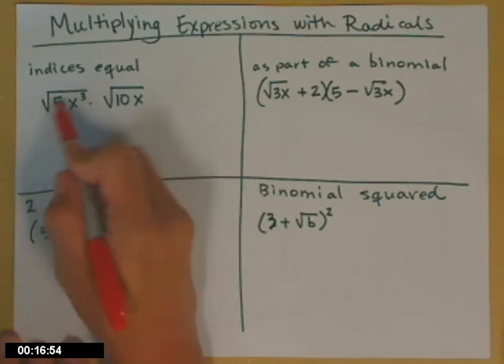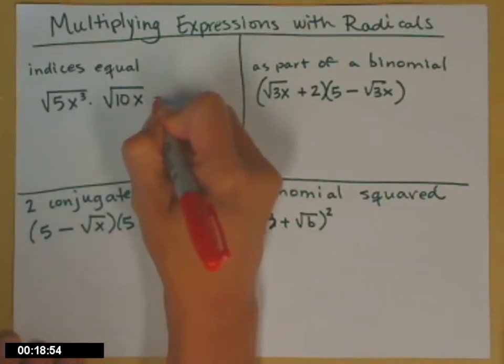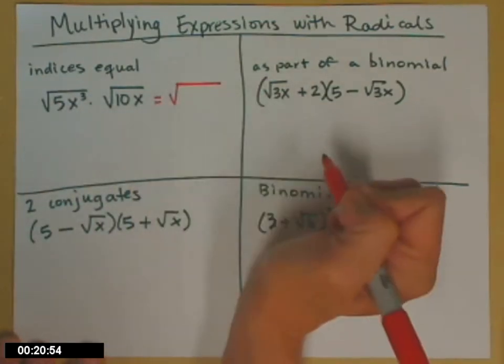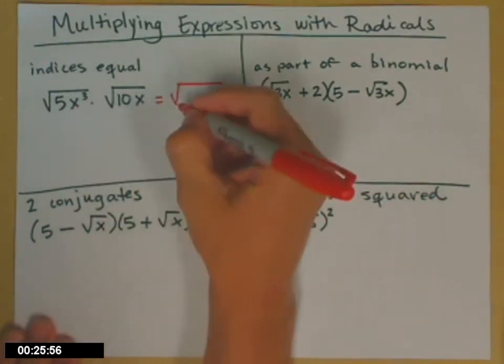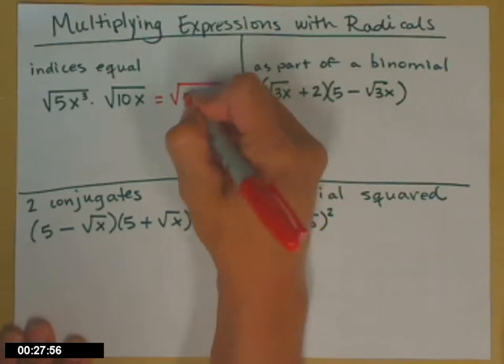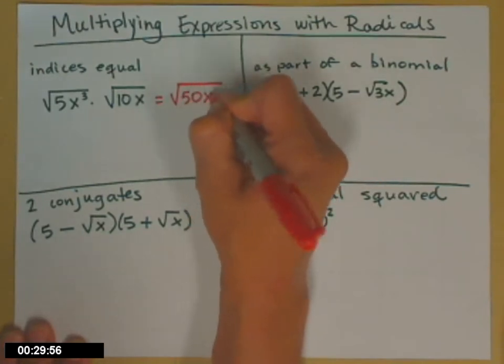Indices is the plural of index, so they're both square roots. So I can go ahead and put everybody under the same radical and just multiply the radicands together. So 5x cubed times 10x squared is 50x to the fourth.